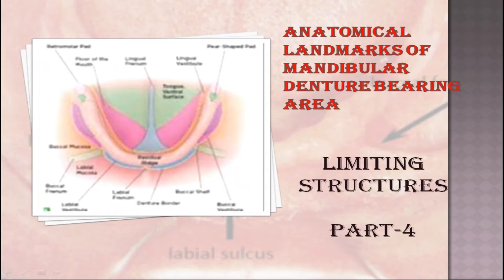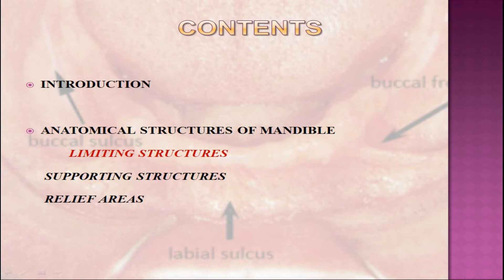Welcome back to A2Z Dentistry. In the last videos, I covered the limiting, supporting, and relief areas of the maxillary arch. In this video, we learn about the limiting structures of the mandibular denture-bearing area. The limiting areas guide us in having optimum extension of the denture so as to engage maximum surface area without encroaching upon normal muscle activity. Encroaching upon these structures may lead to dislodgement of the denture or soreness, whereas if they are not covered properly, it results in a loss of retention and stability.